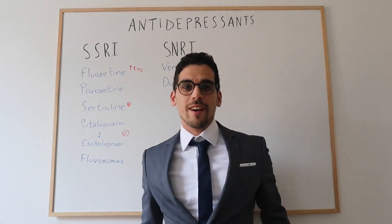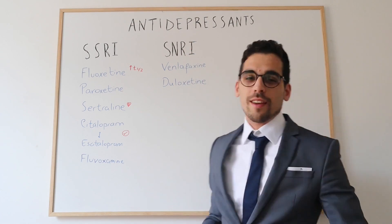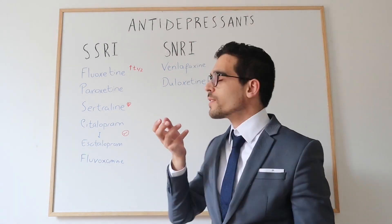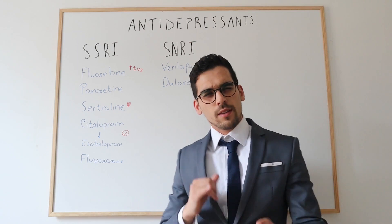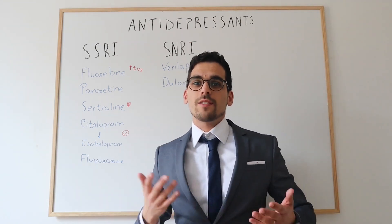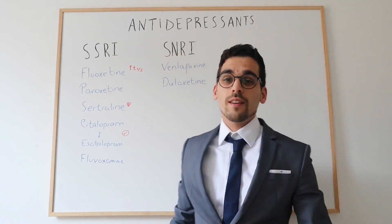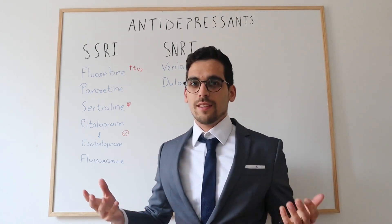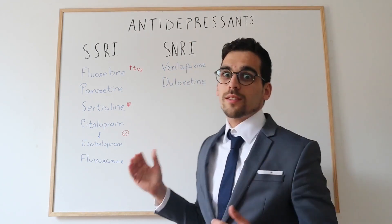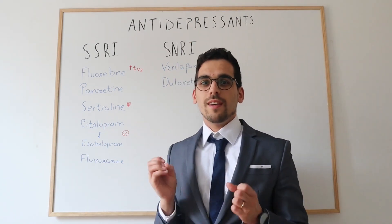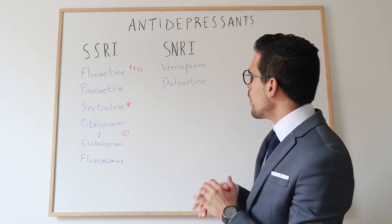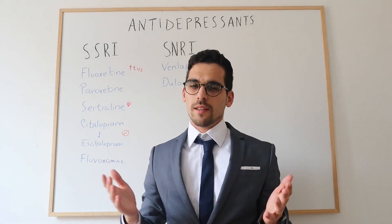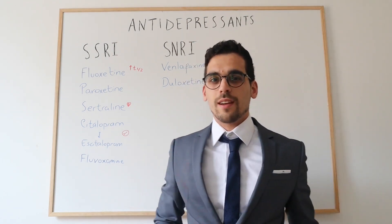Then we have the SNRIs — serotonin and noradrenaline reuptake inhibitors. They inhibit the reuptake of not only serotonin but also noradrenaline. Serotonin is the happiness neurotransmitter, giving us satisfaction, while noradrenaline gives us strength and activates the body to tackle any situation. So these drugs target both neurotransmitters, increasing them in the synapse — the gap between neurons — though side effects from the increased noradrenaline should be taken into account.